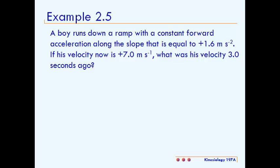In this video, we're going to solve example 2.5. A boy runs down a ramp with a constant forward acceleration along the slope that is equal to 1.6 meters per second squared. If his velocity now is 7 meters per second, what was his velocity 3 seconds ago?